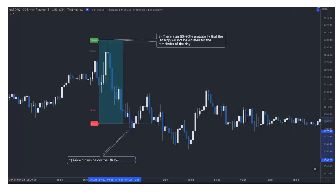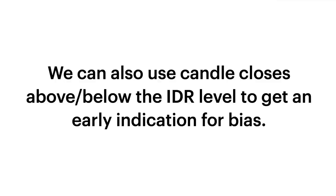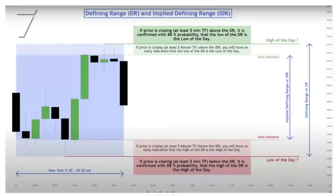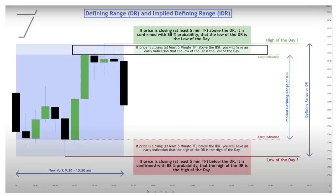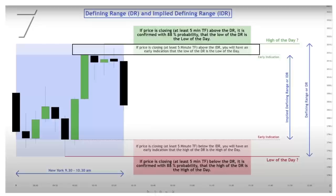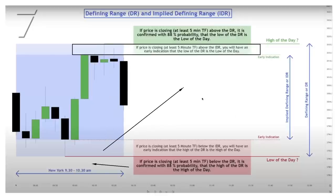If this is all review, you can skip ahead. One thing the master talks about in his videos is that we can use candle closes above or below the IDR level to get an early indication of bias. Essentially, if we close above the IDR in this range, we might be able to use that as an early indication that we should have a long bias and that this low is not going to get touched the rest of the day — and vice versa for shorts.